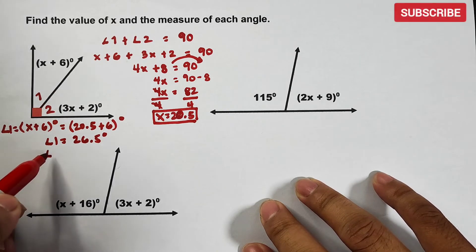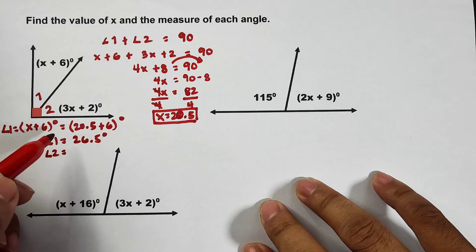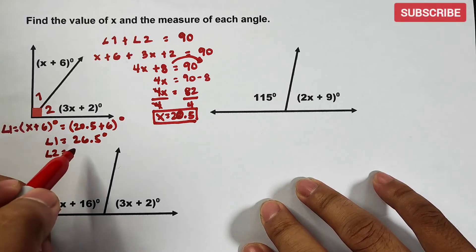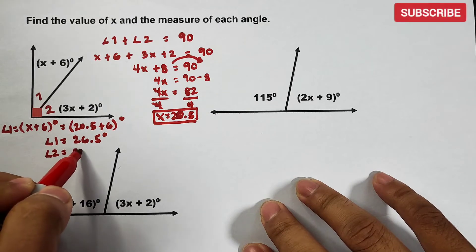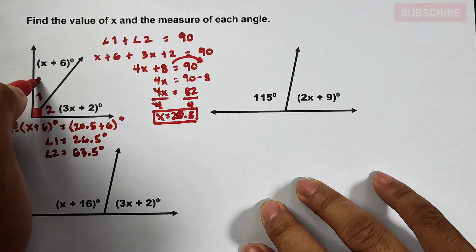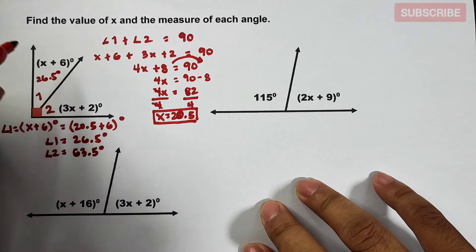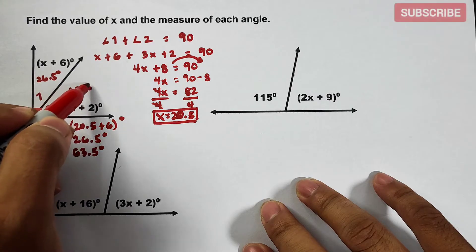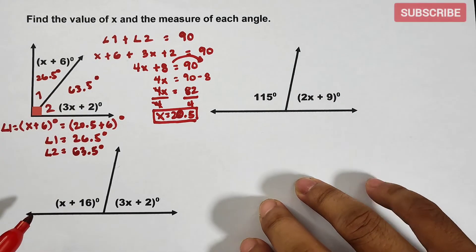Your angle 2 measures how many? We have 63.5 degrees. This is 26.5 degrees. This is 63.5 degrees. Okay guys? So let's continue with item number 2.